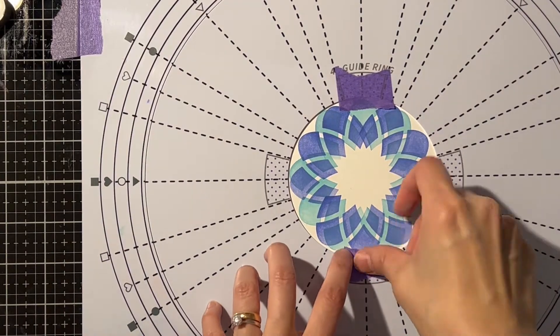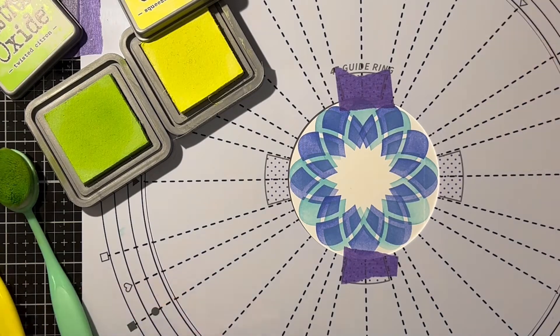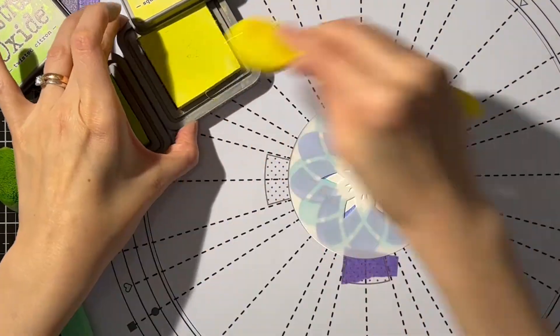Now I'm already done with my 6 inch stencil. To give it more details in the center, I will overlay the 4 inch stencil on top. Let's see what that gives us.